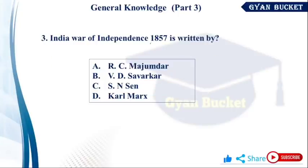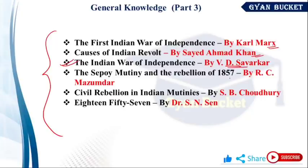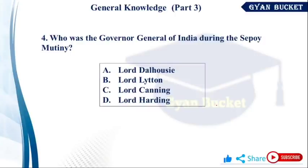The book 'India War of Independence 1857' was written by V.D. Savarkar. The Indian War of Independence and the Rebellion of 1857 — R.C. Majumdar; Civil Rebellion in Indian Mutiny — S.B. Chaudhry; then '1857' by Dr. S.N. Sen. Who was the Governor General of India during the Sepoy Mutiny? Lord Canning — option number C.